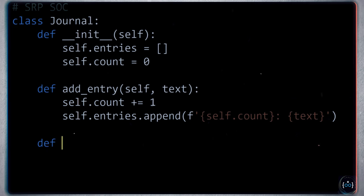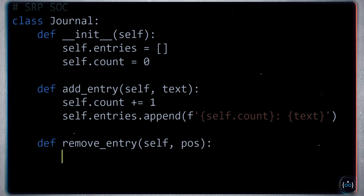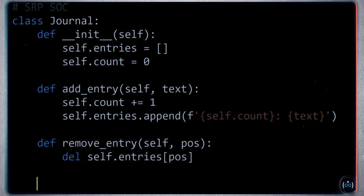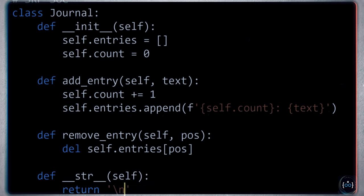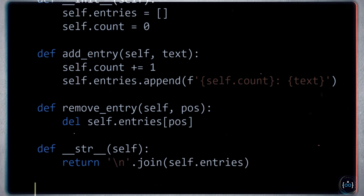Similarly, we can have a method for removing an entry at a particular position using delete. We can also have a human-readable __str__ representation joining all entries with line breaks, so we can print or save them. The storing and removing of entries is the journal's primary responsibility, so we're not breaking the Single Responsibility Principle yet — everything is fine.